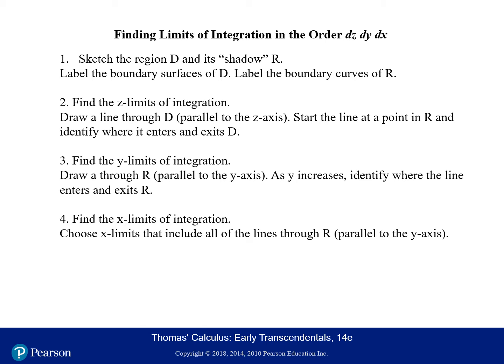You'll start the line at a point (X, Y) in your region R — starting at a point in the shadow and moving through your three-dimensional region. Step three is to find the Y limits of integration. These steps three and four are what you've done with double integrals: draw a line through your two-dimensional region R parallel to the Y axis, going in the direction Y increases, and identify where the line enters and exits that region. Then last, find the X limits of integration.